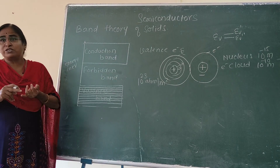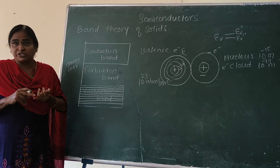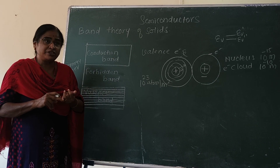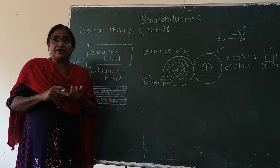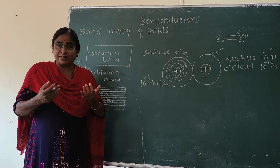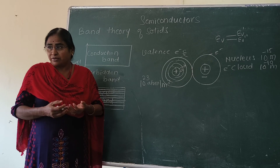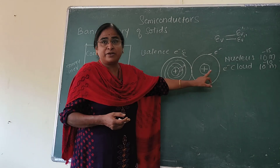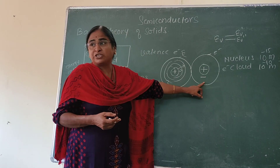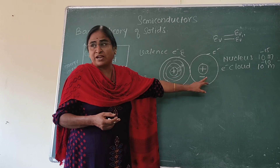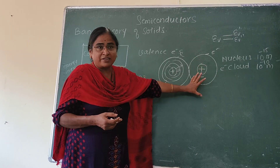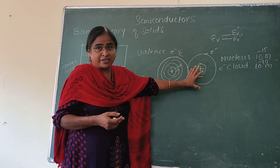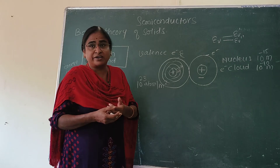We all know what the flow of electricity is — flow of electrons is electricity. That means if we want some material to conduct electricity, electrons should be available so that they can flow and carry current. Every material consists of atoms and all atoms have electrons, but not all materials are able to conduct. That is because we need free electrons to conduct electricity.